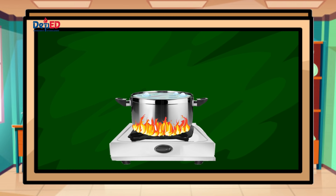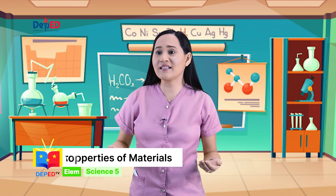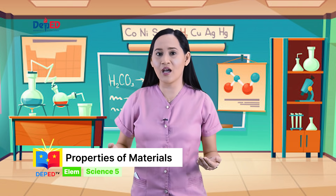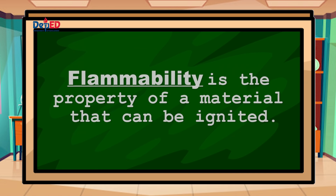Thermal conductivity is another important property. When cooking, pots are usually placed over fire. Metals can withstand the heat and allow the heat from the fire to pass through into what is being cooked. The property of materials that determines whether or not heat can easily pass through is called thermal conductivity. A related but different property — differentiated from combustibility in terms of ease of ignition — is referred to as flammability.